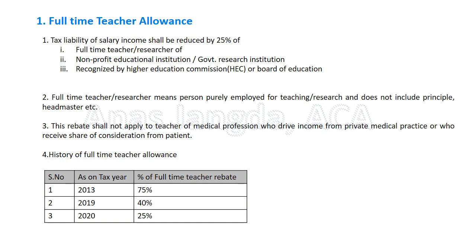A historical note: until 2013, the tax liability of a full-time teacher related to salary was reduced by 75%. Then it changed, and until 2019 it was at 40%. Now the current rate reduces salary tax liability by 25%. So the tax rebate has been gradually reduced over time.